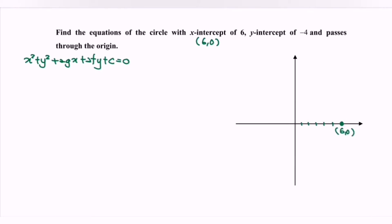The y-intercept means the point at the y-axis. y-intercept of negative 4, meaning that we will have the point (0, negative 4).